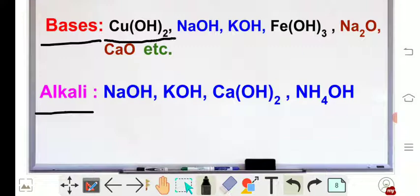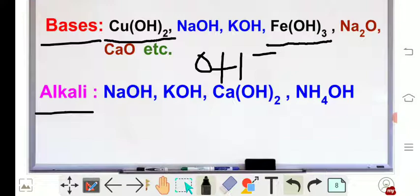For bases like copper hydroxide Cu(OH)₂ and iron hydroxide Fe(OH)₃ — it must dissolve in water, and after it dissolves, it should dissociate and give OH⁻ ion. But that does not happen in the case of copper hydroxide and iron hydroxide.